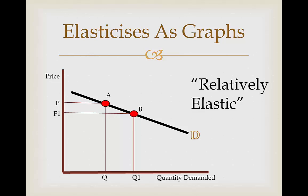Now we can see that if we change the price from P to P1 by decreasing it, there's going to be a huge change in the quantity demanded as it shifts from Q to Q1. From this we can see that a relatively elastic curve is one which has a very responsive change in quantity demanded following a minor change in price.